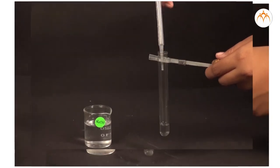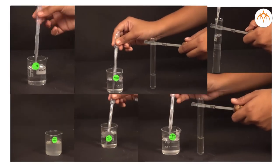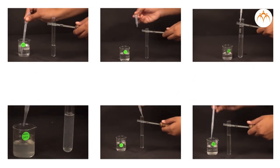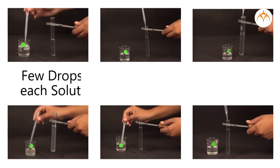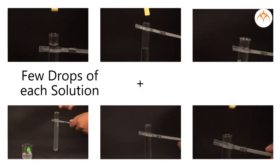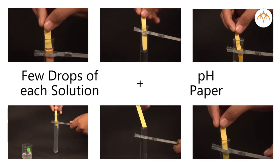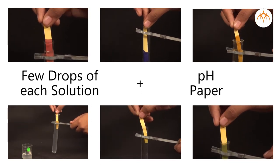First, we place six clean and dry test tubes in a test tube stand. We take each solution in one test tube each. We place a small piece of pH paper on a glazed tile.